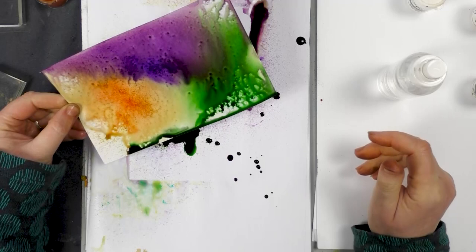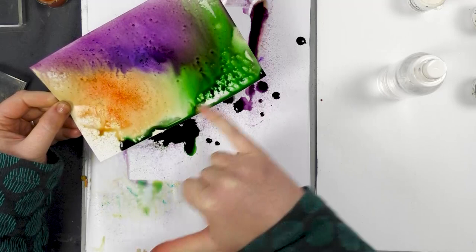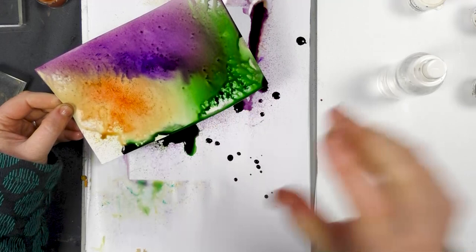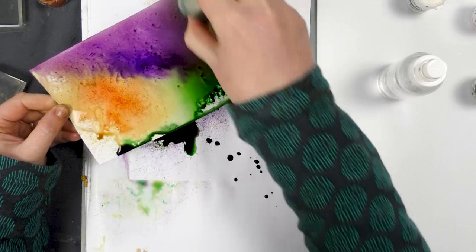Don't worry about these white areas if you miss anywhere. We can then use a smoothie. When this is dry, we use a smoothie and we just cover those areas in a different color. So as I say, don't worry about that.